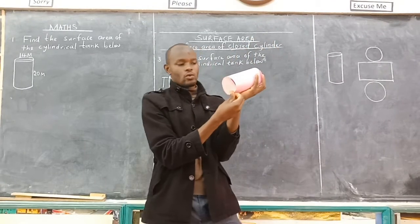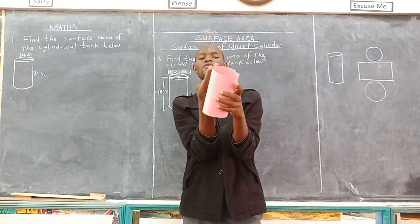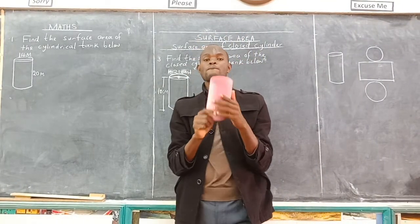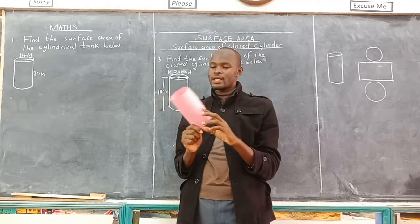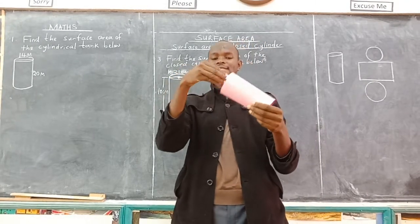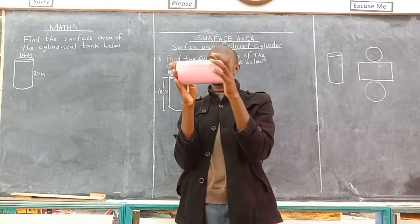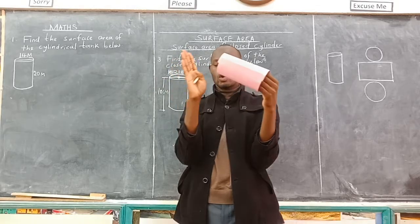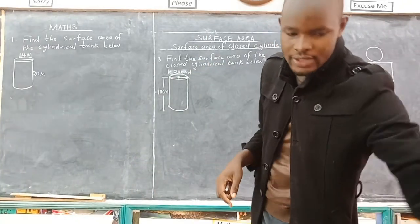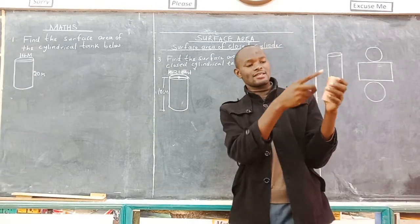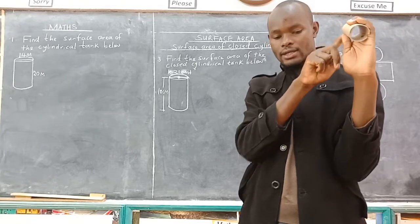We have a circle at one end, another circle at the other, and then we have a curved surface. For a shape to be called a cylinder, it must have the curved surface and the circular ends — two of them. It might be open or closed. Some cylinders are open because one or both circular ends are missing.